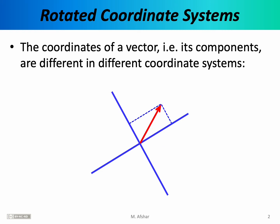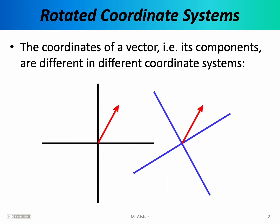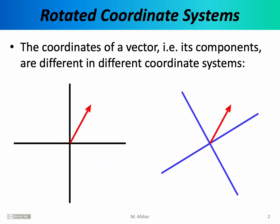Hence we say that the coordinates or components of a vector depend on the coordinate system being used. This is an important fact because going forward, when we talk about the components of a vector, we must carefully consider the coordinate system that is being used.